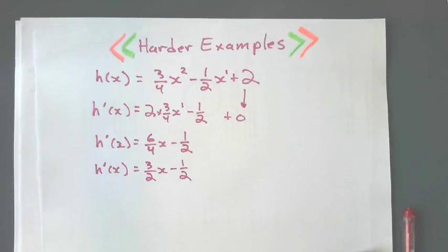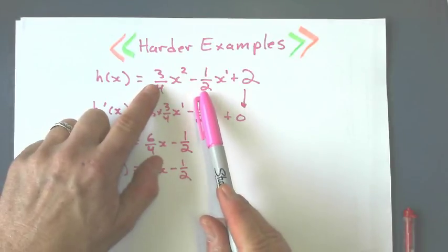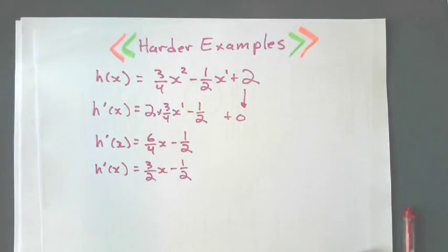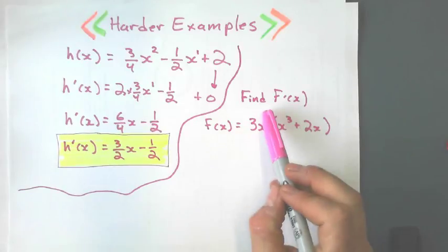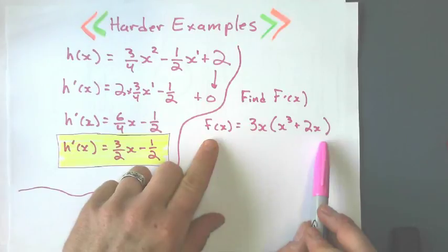So I don't rewrite that 0 again. The only thing I can do on that last step is simplify this fraction of 6 quarters, which gives me 3 halves. Now the only reason why that was harder, I guess, was because of these fractions here. All right. Next example, we want to find f dash x. We want to find the derivative function. Here's the original function.